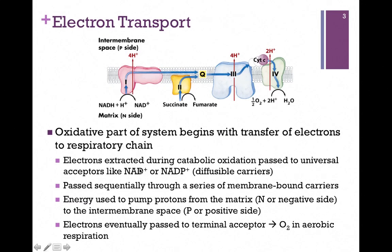The oxidative part of the system begins with the transfer of electrons to this respiratory chain, as illustrated here. During the processes of catabolism, we oxidize nutrients and pass those electrons to universal acceptors like NAD+ or NADP+. These were diffusible carriers, and now we're going to take those diffusible carriers and pass them to this electron transport chain, as illustrated at the top of the screen.